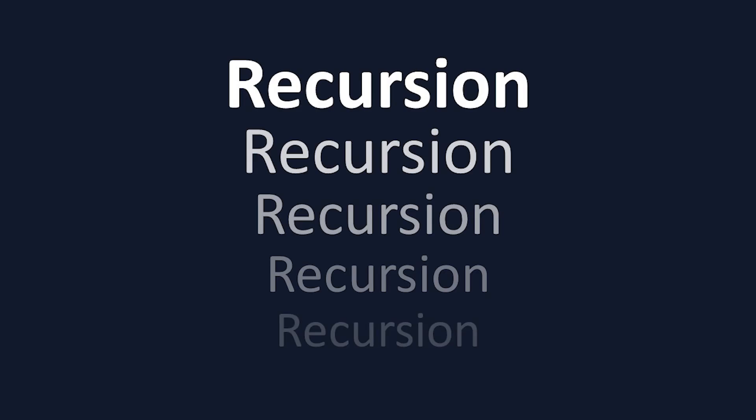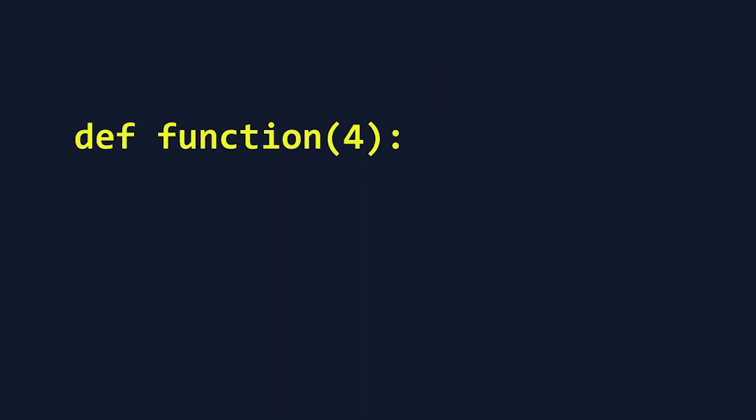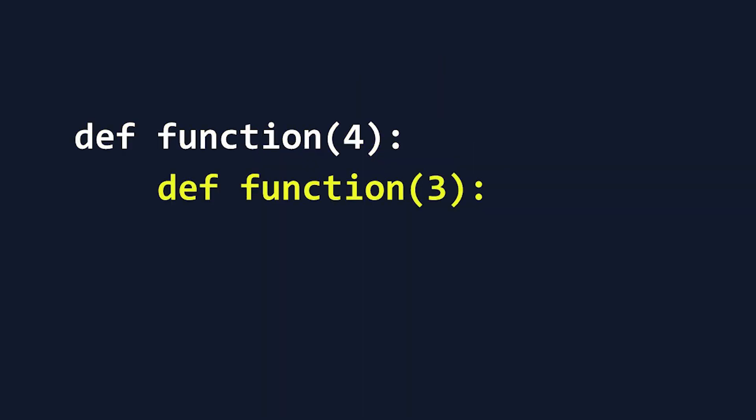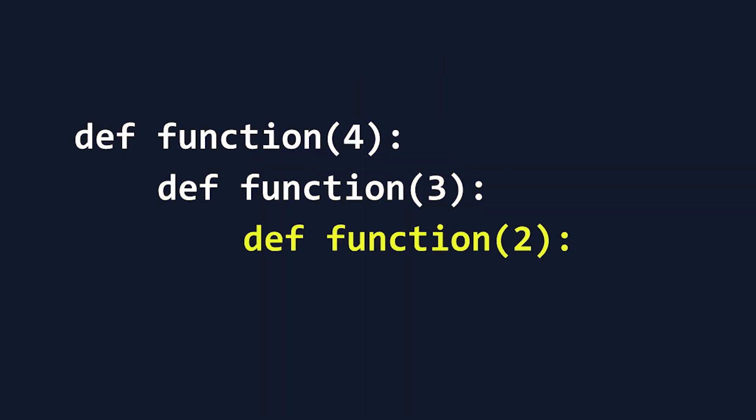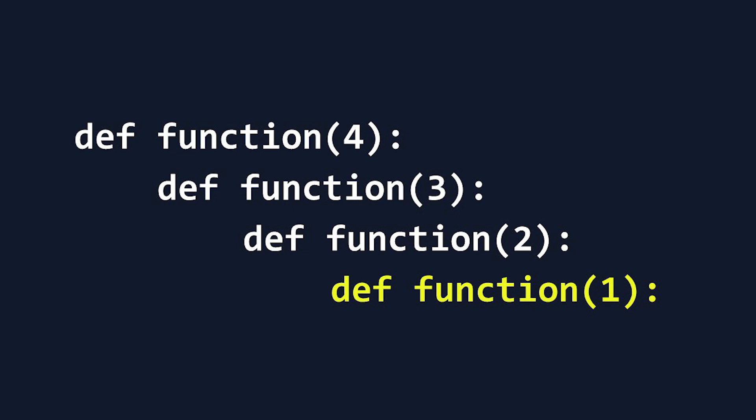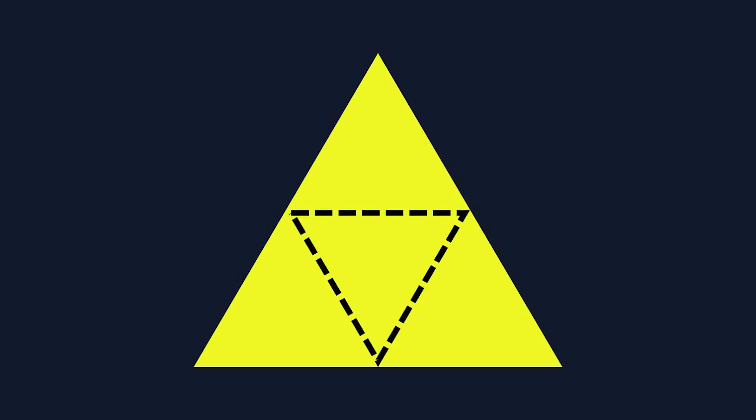Recursion occurs when a function calls itself, solving smaller and smaller sub-problems each time. Take a look at this triangle. It's a bit plain right now, so let's create a new pattern, following a rule to always remove the middle part of the triangle.